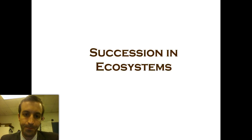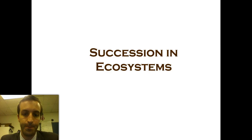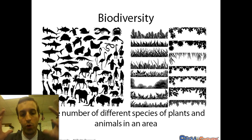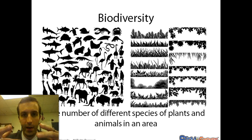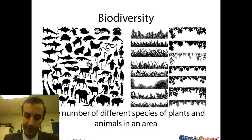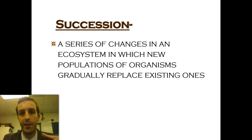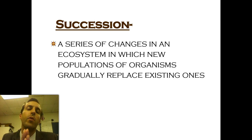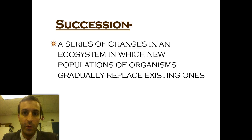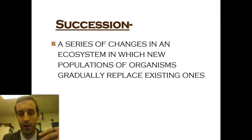So let's get started. What are we talking about with succession? We've talked about biodiversity — this is how many different organisms you have living in an area, all the different kinds, from your bacteria all the way up to your elephants. Succession is what happens when you are starting from scratch. The more academic definition is a series of changes in an ecosystem in which new populations of organisms gradually replace existing ones — replacing grasses with bigger shrubs, with bigger trees, on and on and up and up.